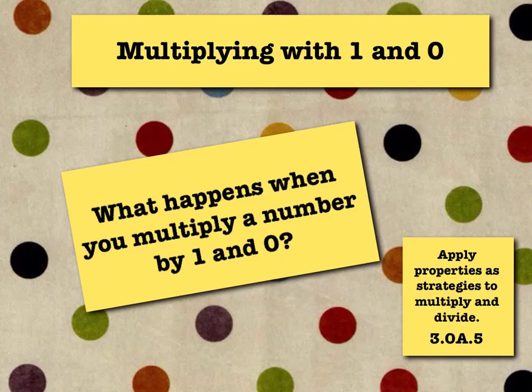Alright, here's our new lesson. We are going to multiply things with 1 and 0. So our question is, what happens when you multiply a number by 1 and 0? Who knows? Let's find out.